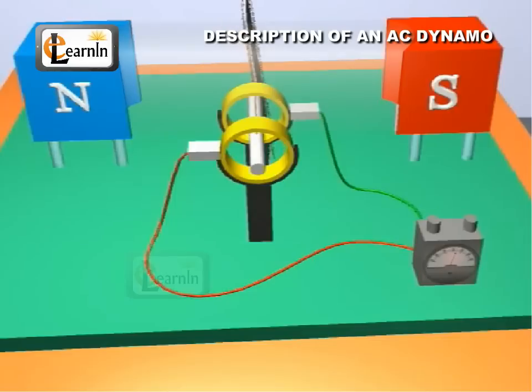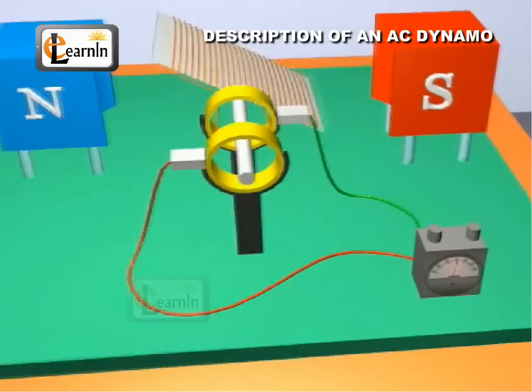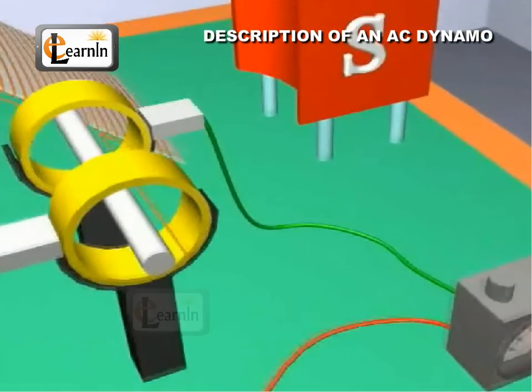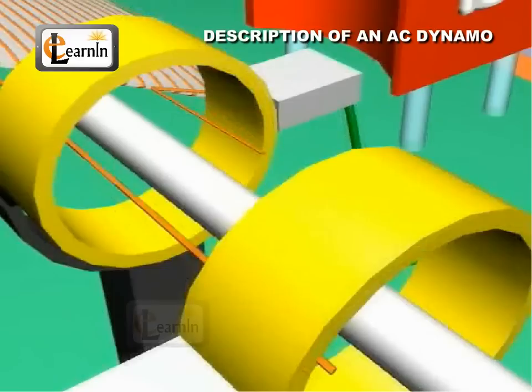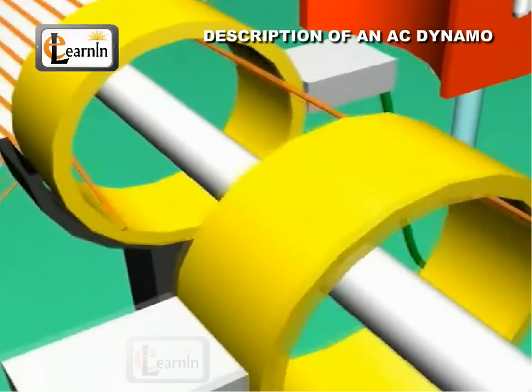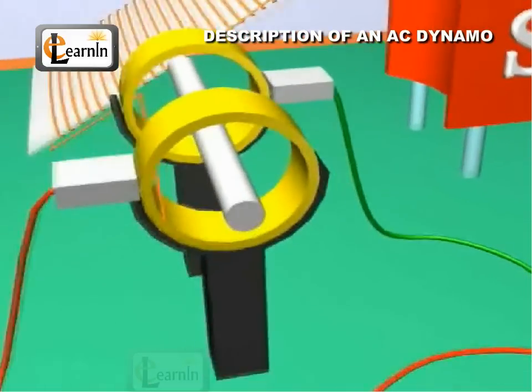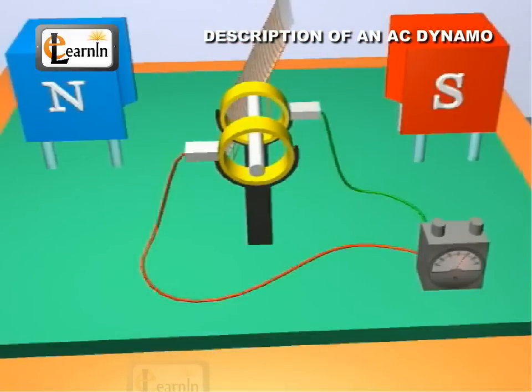The ends of the armature coil are connected to two different slip rings, S1 and S2 respectively. The rings are insulated from each other. These rings rotate along with the armature about the same axis as that of the coil.